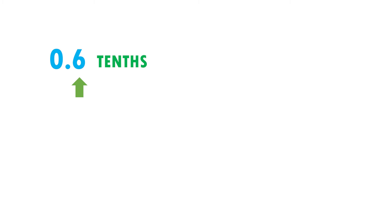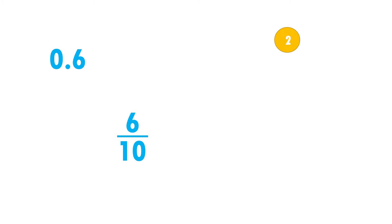Now I have 0.6. We realize that the digit is in the tenths position, so I put 6 in the numerator and 10 in the denominator. I try to divide by 2: 6 can be divided by 2 and so can 10. So 6 divided by 2 equals 3, and 10 divided by 2 equals 5. Therefore 0.6 equals 6/10, or simplified, 3/5.